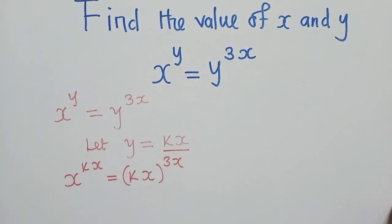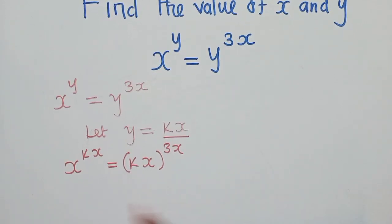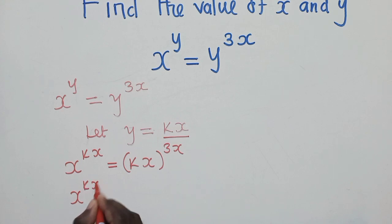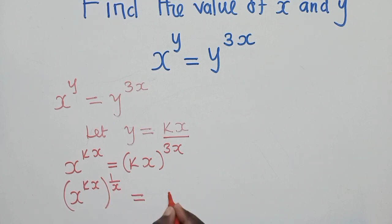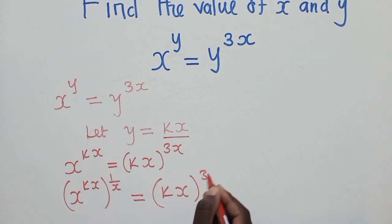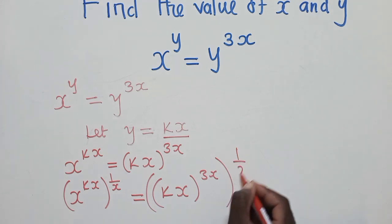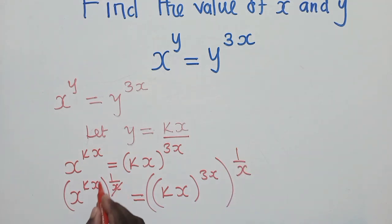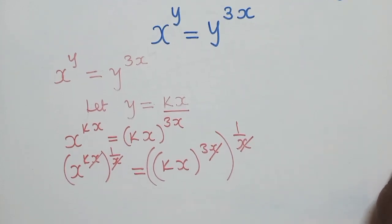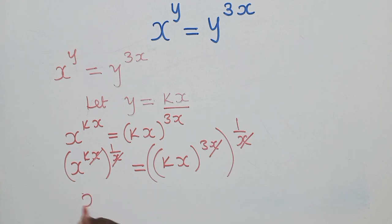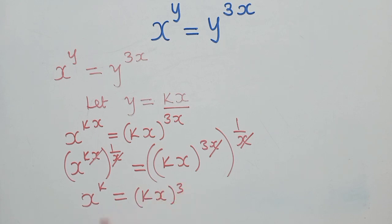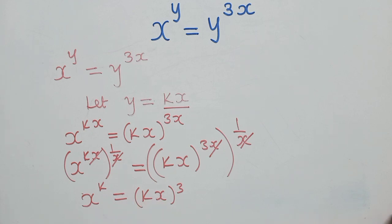From this stage, we need to cancel this side — the X and the X on this side. How do we cancel? We apply the inverse, so we're going to apply the power 1 over X, because we want to cancel the X which is here. Again, we say power 1 over X on the other side. This X and X here will cancel, and this X and X will cancel. So after all the cancellations, we shall remain with X power K is equal to KX power 3.